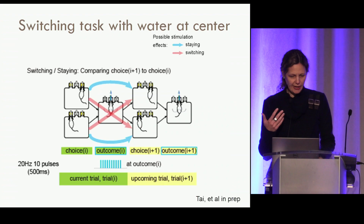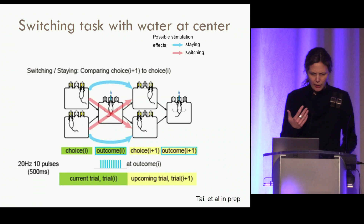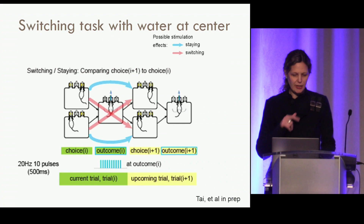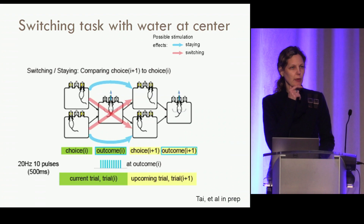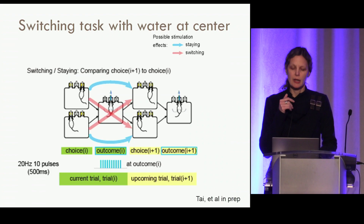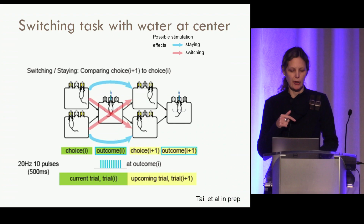It's perhaps not surprising that D2-positive spiny projection neurons are not reinforcing — animals don't nose-poke with any regularity to drive activity in those neurons, and literature suggests stimulating those neurons may even be aversive. So let's take this into a decision-making task context. In this version, the animal initiates in the peripheral port — left or right — to start the task, then goes to the center to get water, then back out to the rewarded port. The stimulation comes at the center port when the animal is drinking its water.